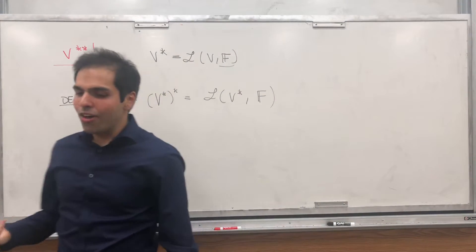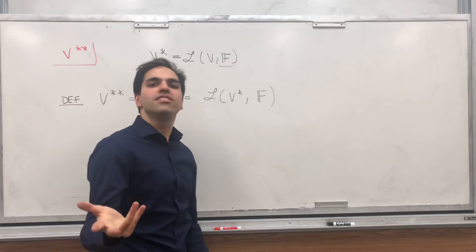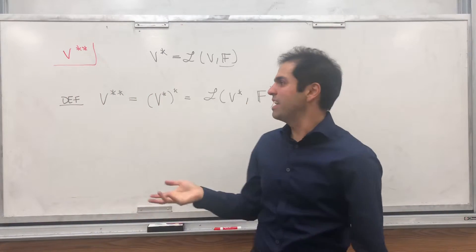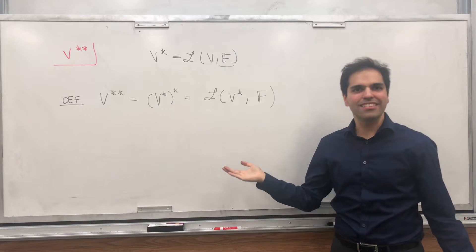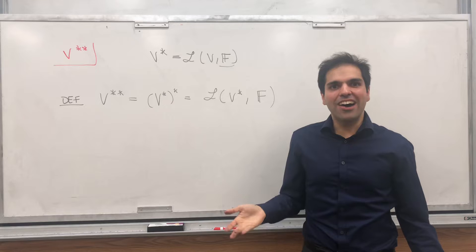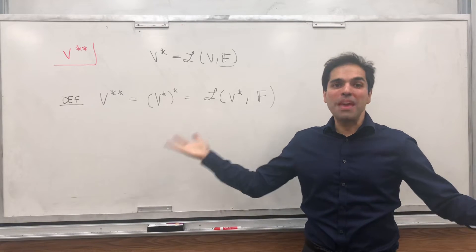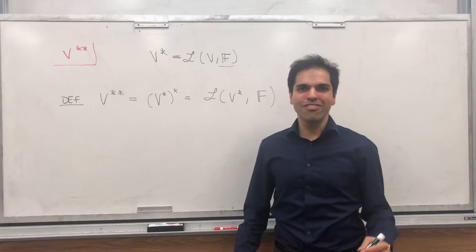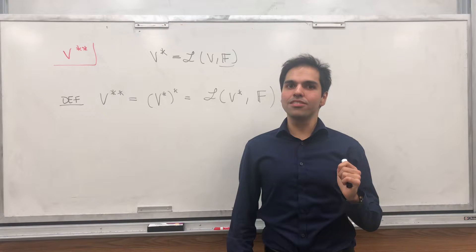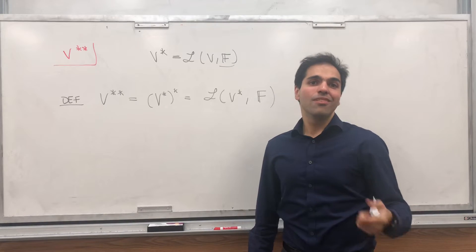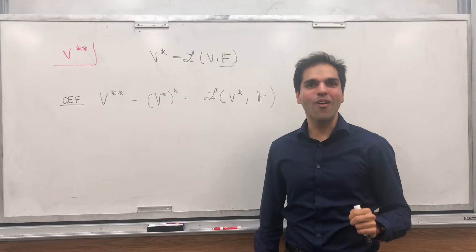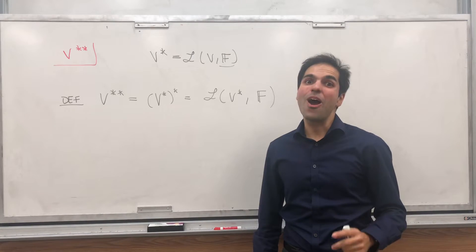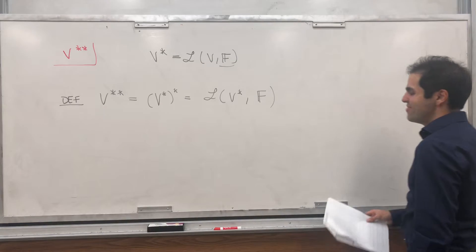And now, if you think of V star as being a shadow space, you might ask, what is the shadow of a shadow space? And it turns out, mathematically, it's basically the space itself, which actually makes you think, because what this is saying is that you are the shadow of your own shadow. Wow, I know, pretty deep.